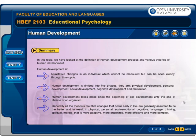Human development takes place since the beginning of cell development until the end of lifetime of an organism. Generally, all the theorists feel that changes that occur early in life are generally assumed to be better and to result in physical, personal, socio-emotional, cognitive, language, thinking, spiritual, and moral development that is more adaptive, more organized, more effective, and more complex.